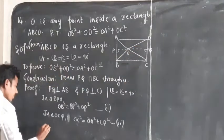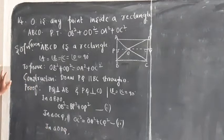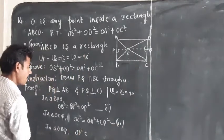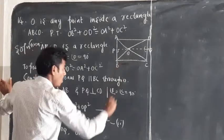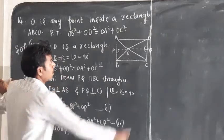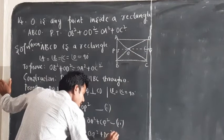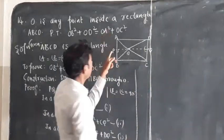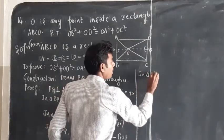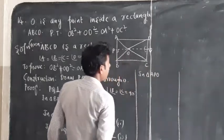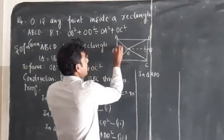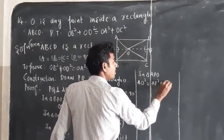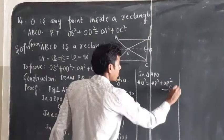In triangle ODQ, since the angle at Q is 90 degrees, OD square equals OQ square plus DQ square. We call this equation number 3. In triangle APO, since angle P is 90 degrees, OA square equals AP square plus OP square. We call this equation number 4.